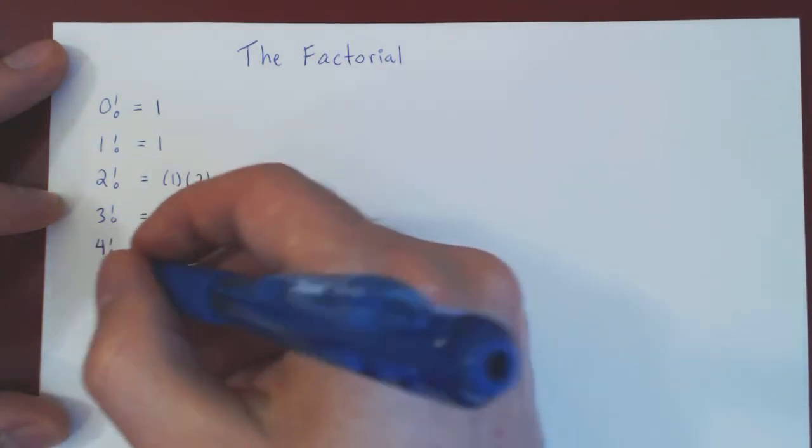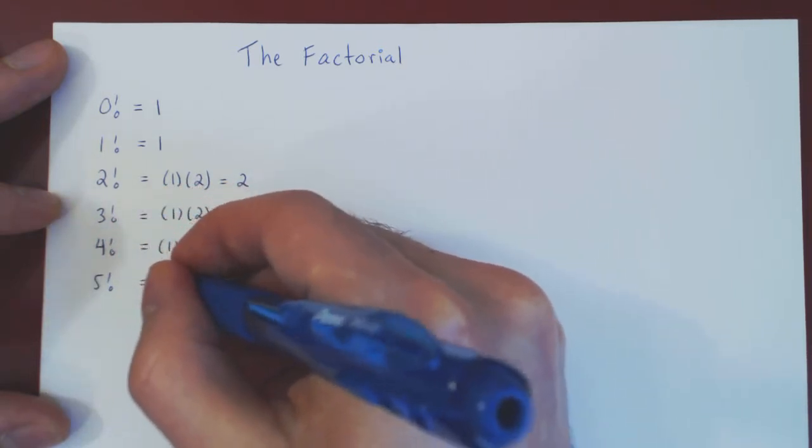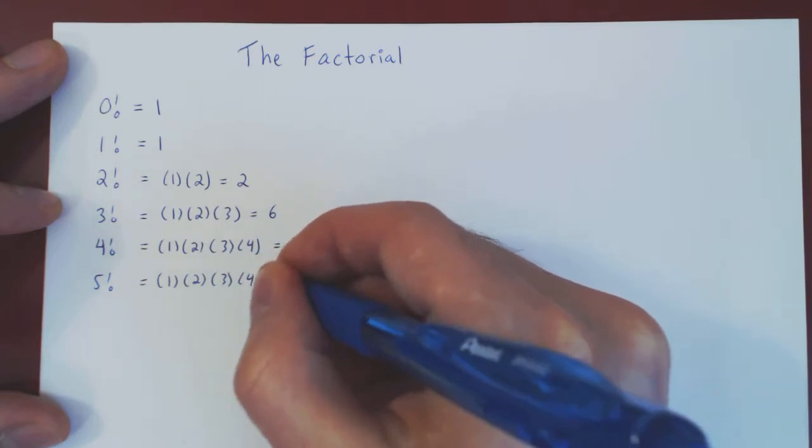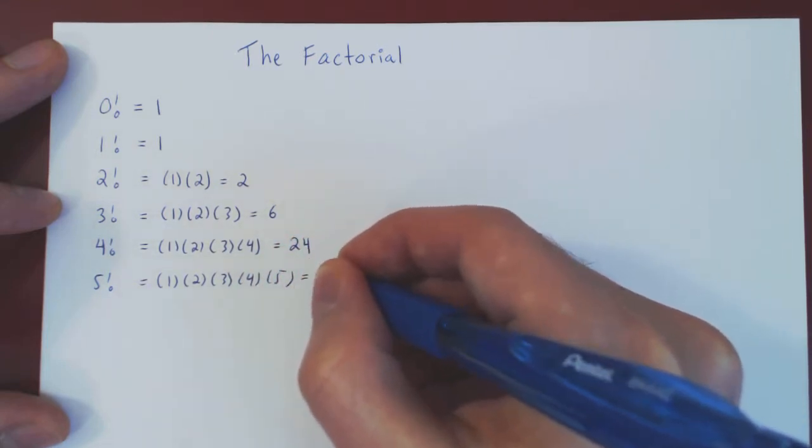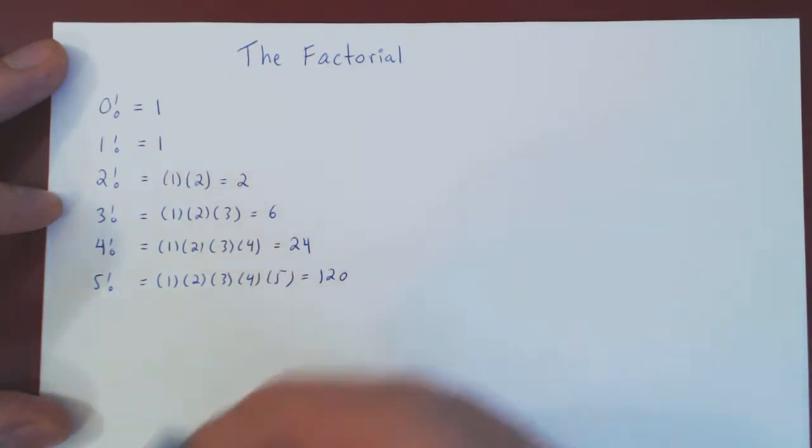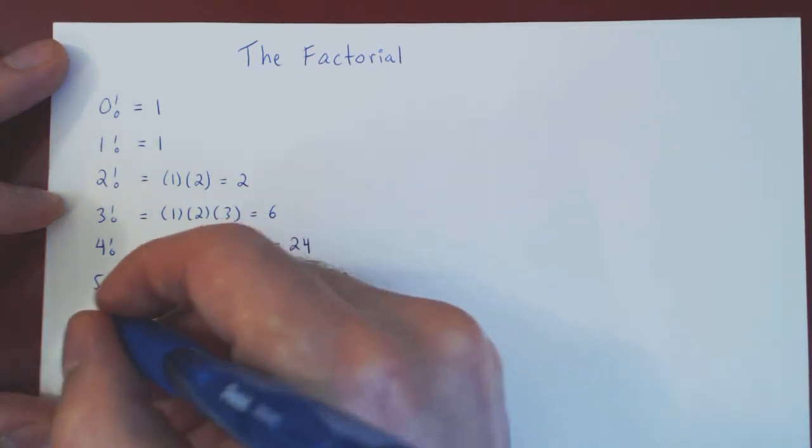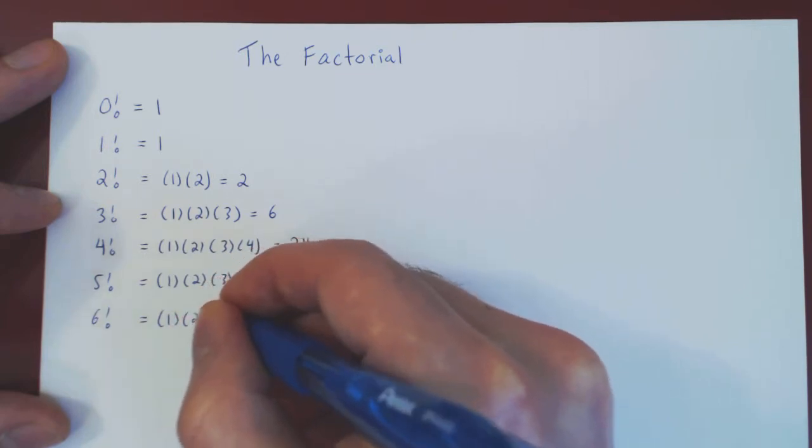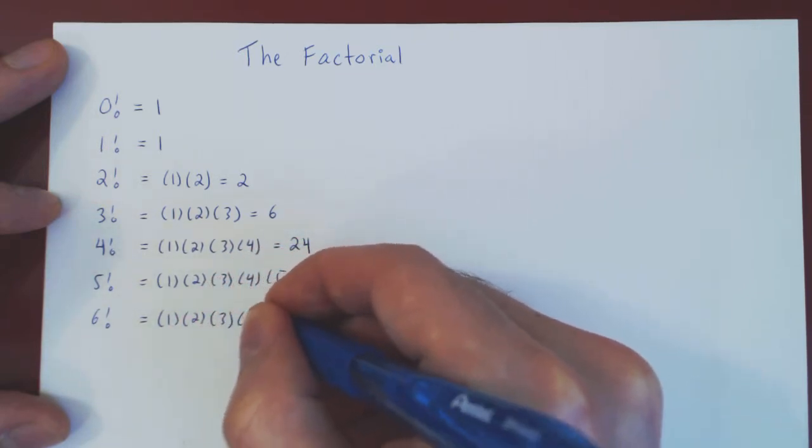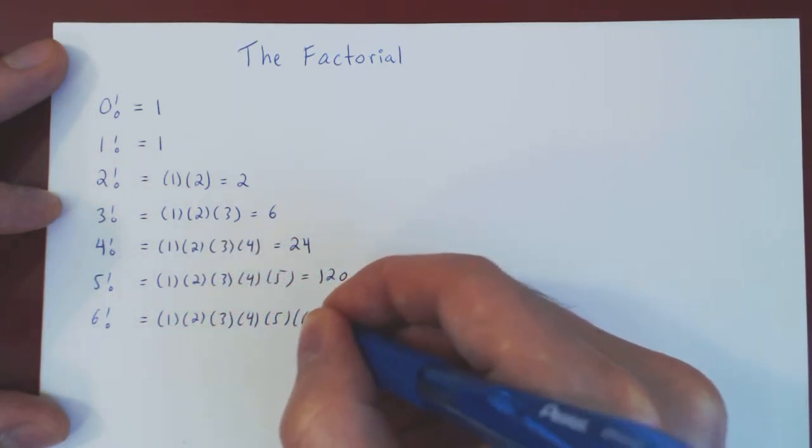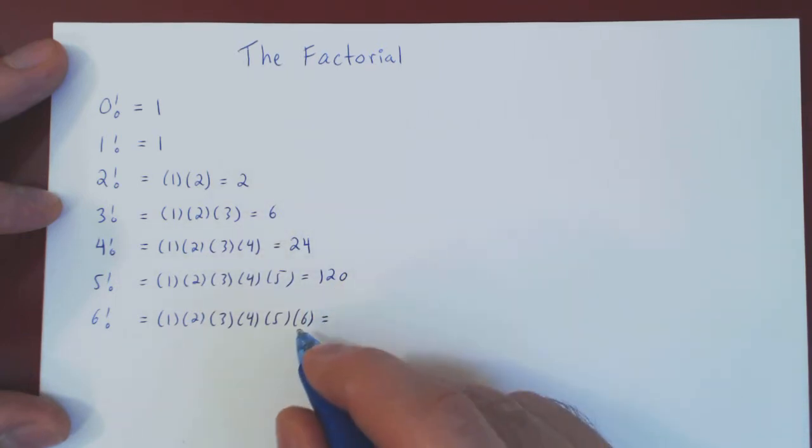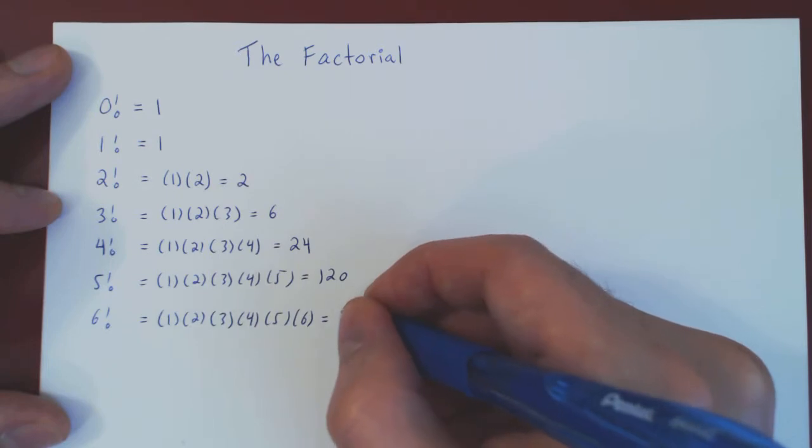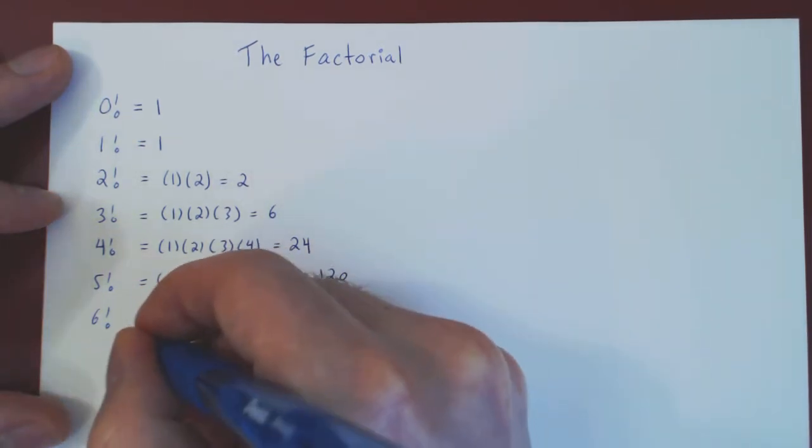5 factorial is 1 times 2 times 3 times 4 times 5, which is 120. Let's do one more, 6 factorial, which is 1 times 2 times 3 times 4 times 5 times 6. So it's 6 times 120, which is 720. And so forth.